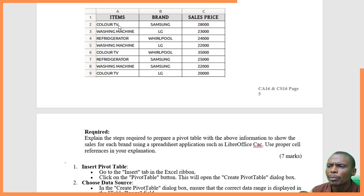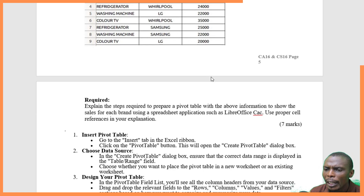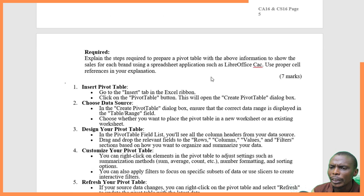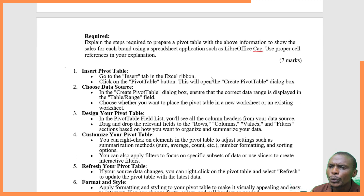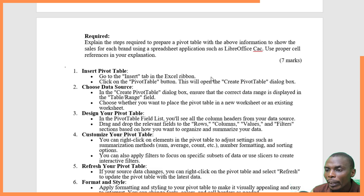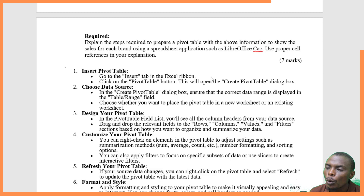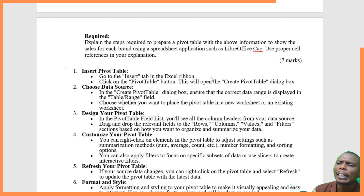The range starts from A2 for Color TV to C9 for the price. That is the data source range of the table. Then choose where to place the pivot table — either in the same sheet you're working on or in a new sheet. To place it in a new sheet, press new and add a sheet there. Now you can design your pivot table.